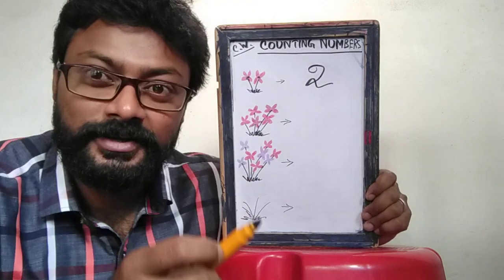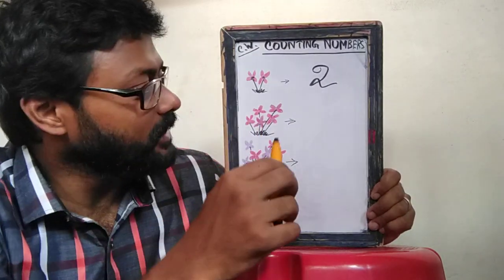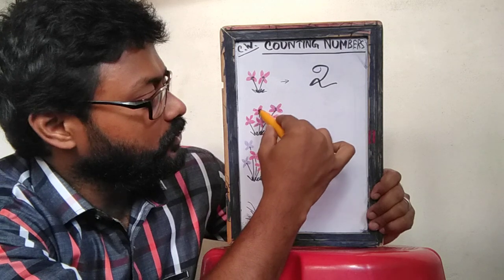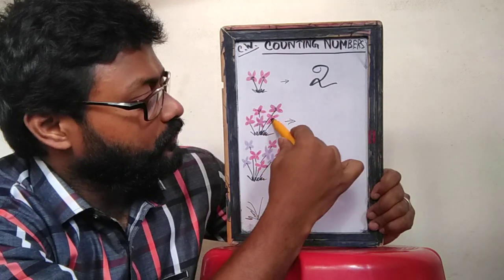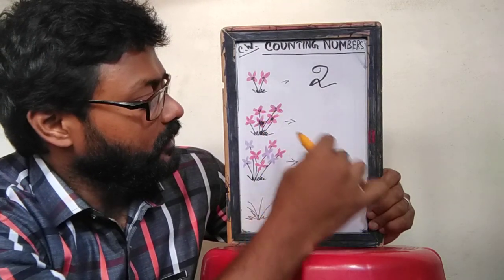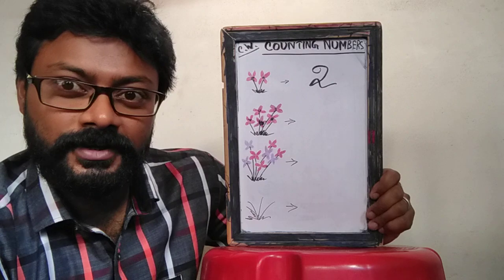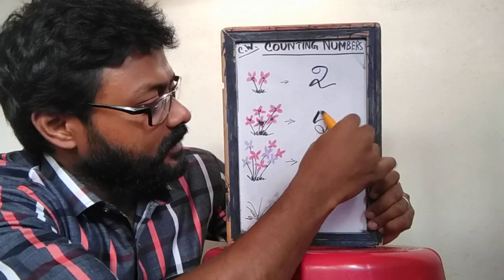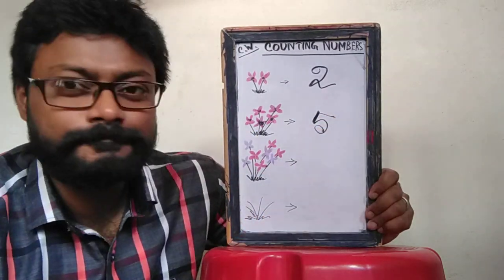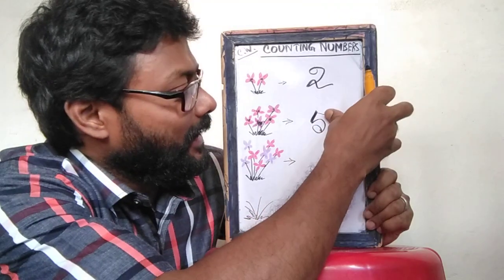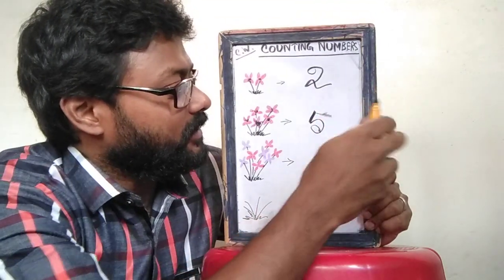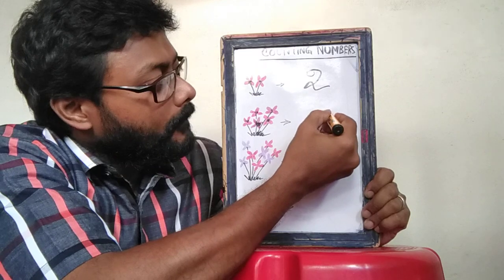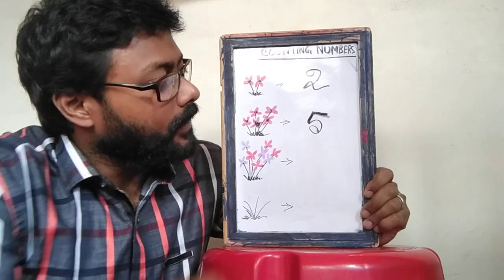The next one. You will count it with me? Let's start. This is 1, 2, 3, 4, 5. There are 5 flowers. I am sorry — it is alright. 5.